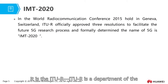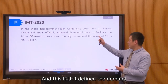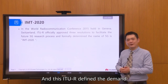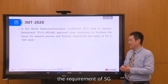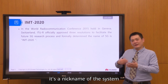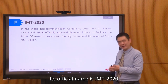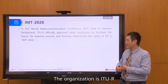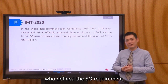It is the ITU-R — the ITU-R is a department of the United Nations working on telecommunications. This ITU-R defined the demand and requirements of 5G. So while 5G is a nickname for the system, its official name is IMT 2020, and the organization that defines the 5G requirements is the ITU-R.